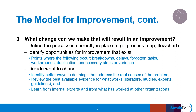Now let's look at the third question: what changes can we make that will result in an improvement? Before answering this question, the team should understand the processes currently in place, how they are working, what barriers exist, and then identify opportunities for improvement. Process mapping is a helpful tool to aid in understanding the processes currently in place and where there are opportunities for improvement. When using process mapping, you can learn what facilitates the current process and where it isn't working well for team members, where there are breakdowns, workarounds, or where variation occurs, and where there is duplication or unnecessary steps.